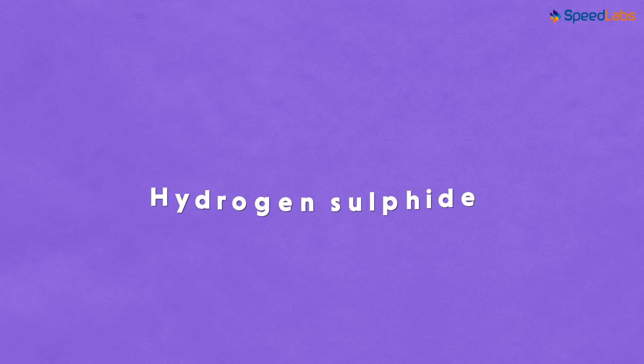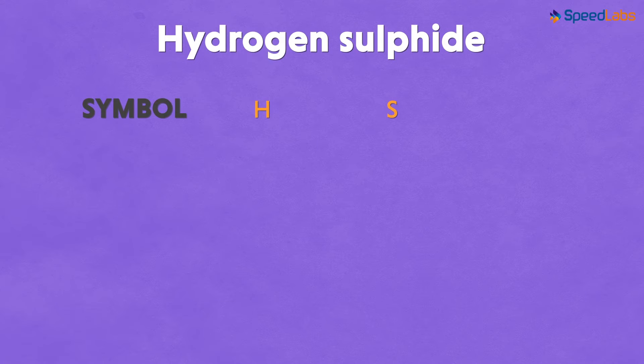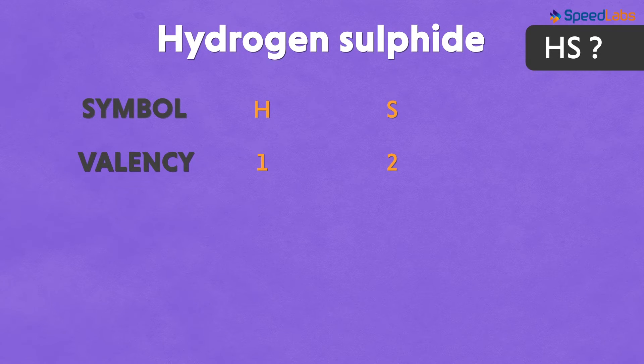Similarly, let us write the formulae for another simple compound that's hydrogen sulphide. Let us first write the symbol for each, followed by their valencies. Now can we write it as HS for this? No! Absolutely not! Because the valencies for each are not the same.